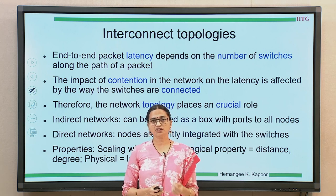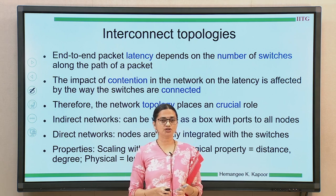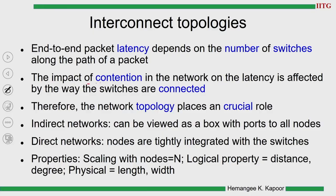Topology plays a very critical role in the performance of a parallel architecture system. We want to reduce contention while keeping the network connected. We want multiple paths to be available in case of heavy traffic, and the latency of every packet should be as small as possible. This network topology — the method of connection — plays a crucial role in the performance of the system.